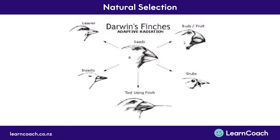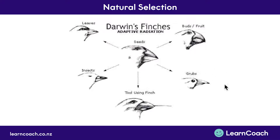Finches that ate buds or fruit had a shorter, stronger beak to break them open. The ones eating grubs had longer, skinnier beaks to better extract the grubs. Others needed to use tools, ate insects, or ate leaves. This shows natural selection for certain beak shapes and types of finches because it better suited the environment — these birds could better access food, so they survived longer, bred more, and their offspring had similar looking beaks.